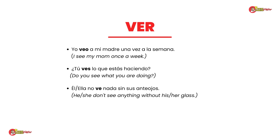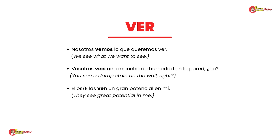Next is the verb ver — to see. Yo veo a mi madre una vez a la semana — I see my mom once a week. ¿Tú ves lo que estás haciendo? — Do you see what you are doing? Él/ella no ve nada sin sus anteojos — he doesn't see anything without his glasses. Nosotros vemos lo que queremos ver — we see what we want to see. Vosotros veis una mancha de humedad en la pared, ¿no? — You see a damp stain on the wall, right? Ellos/ellas ven un gran potencial en mí — they see great potential in me.